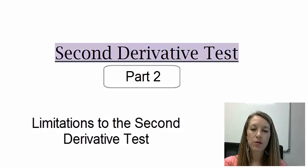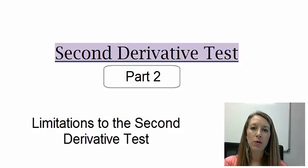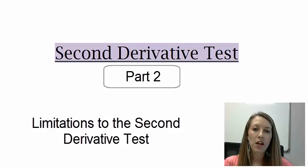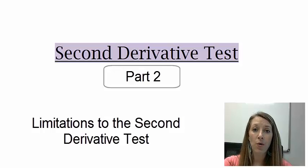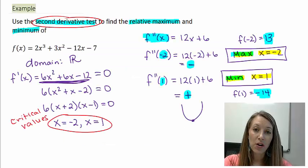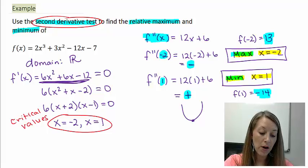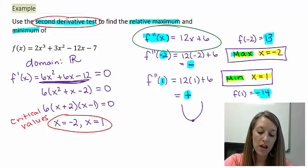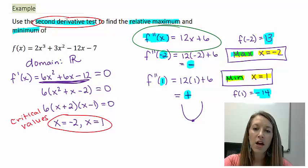In the last video, I introduced the second derivative test as an alternative way to find relative extrema rather than using the sign chart. In this video, I'm going to show you that it's not necessarily a better way. If your second derivative, like in our last example, was very easy to compute, then the second derivative test is most likely going to be shorter than using the sign chart.